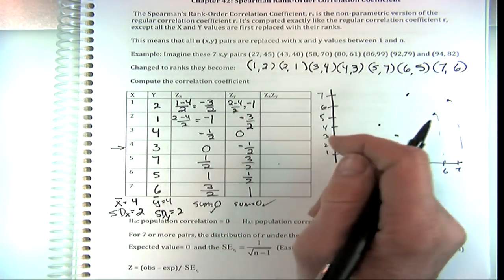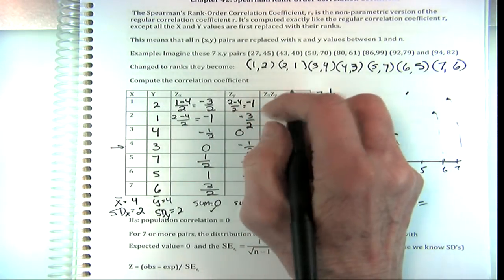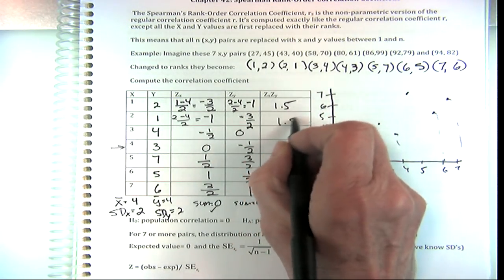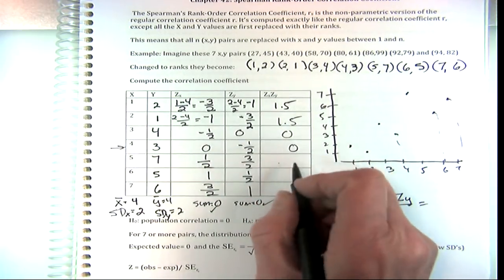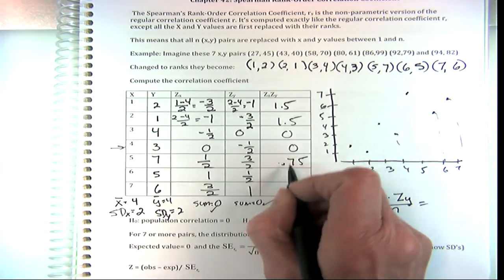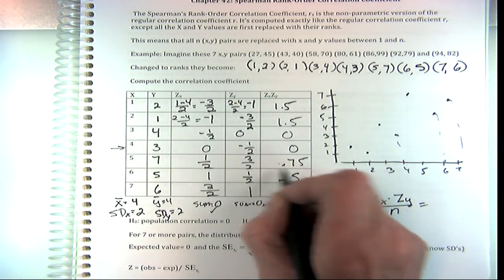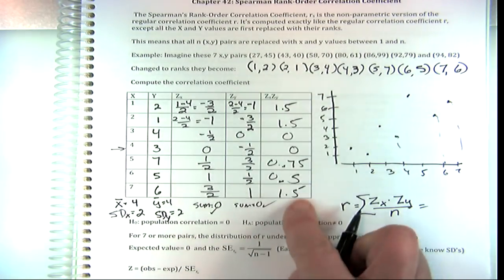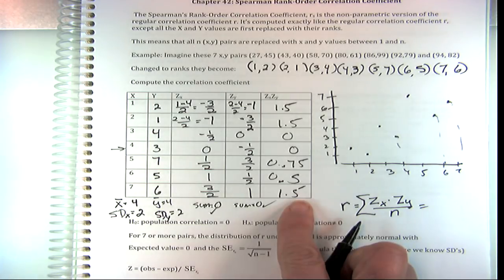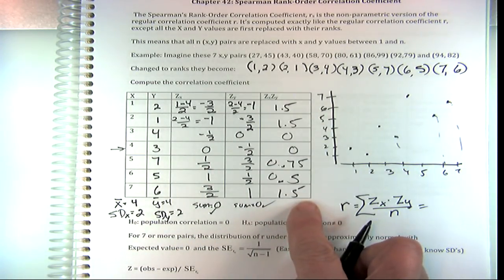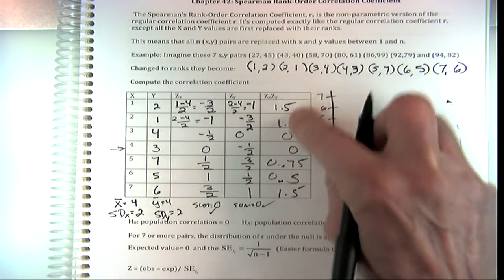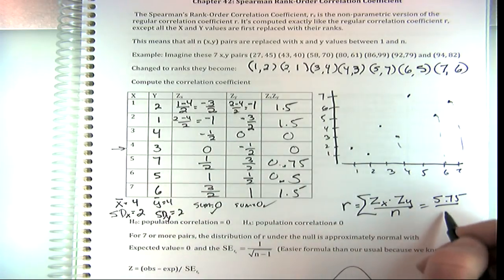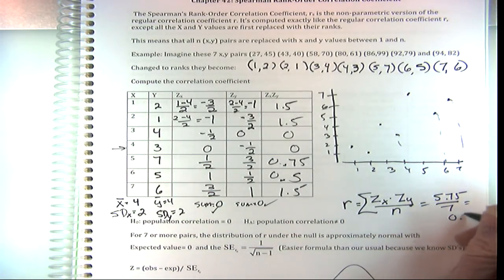Now we take the products of the Z-scores: (−3/2)(0) = 0... working through all pairs: 1.5, 1.5, 0, 3/4, 1/2, and 1.5. Wait, let me be precise: the products are 0 and the rest sum to give us 5.75. Divided by 7, that gives us R_s = 0.84 — a very strong correlation coefficient. Make sure it's between −1 and 1. That's a strong correlation.